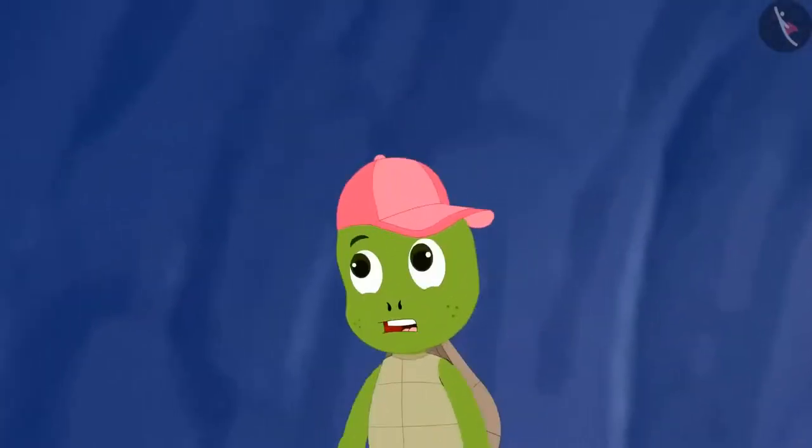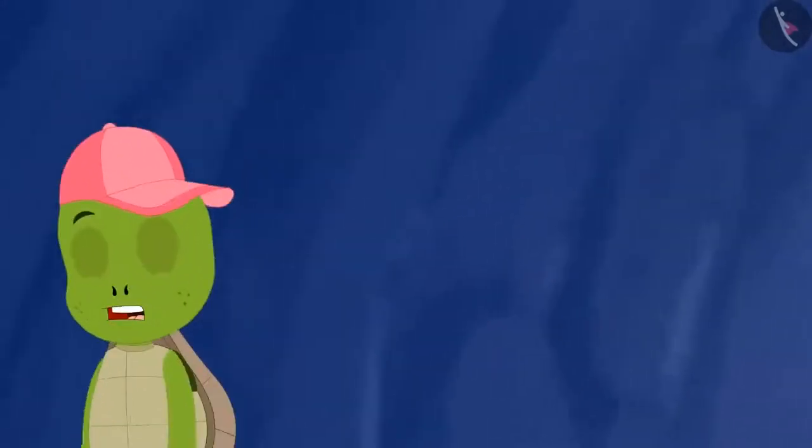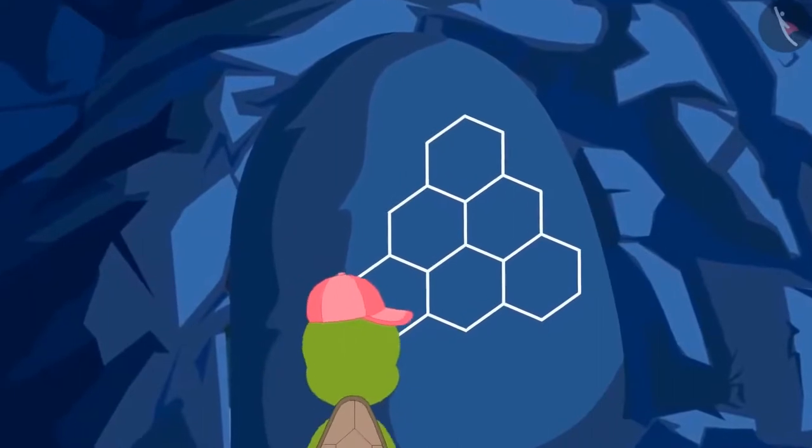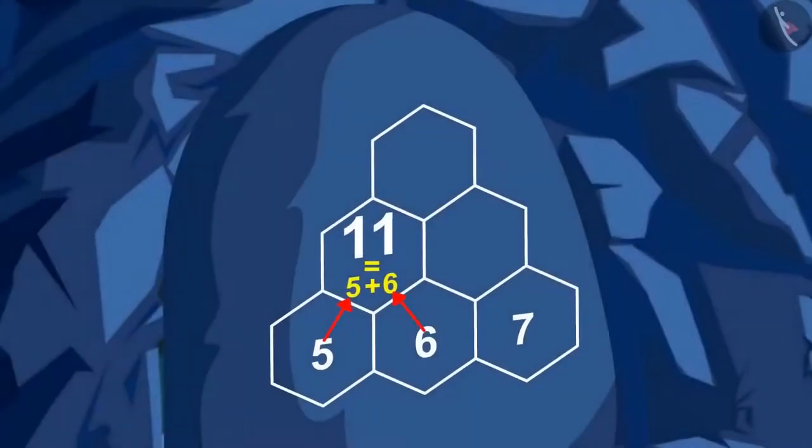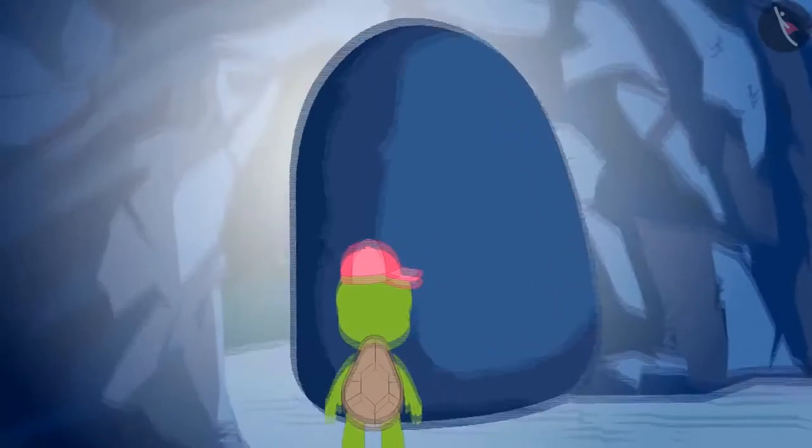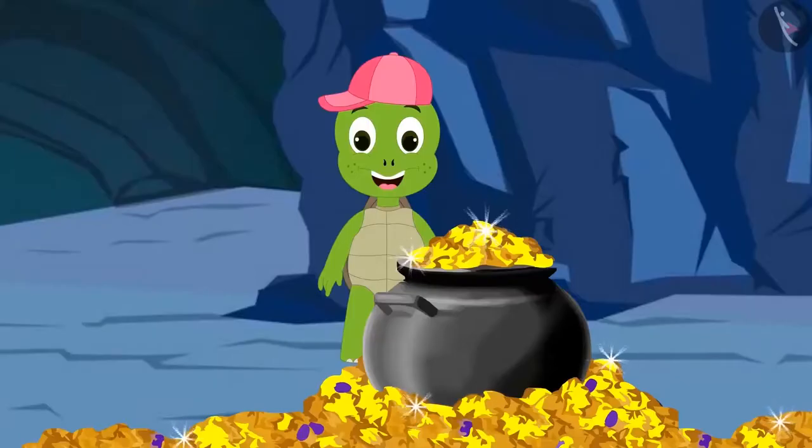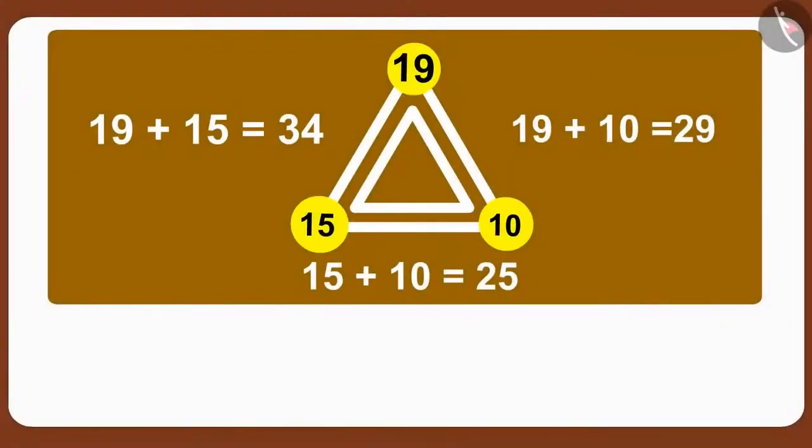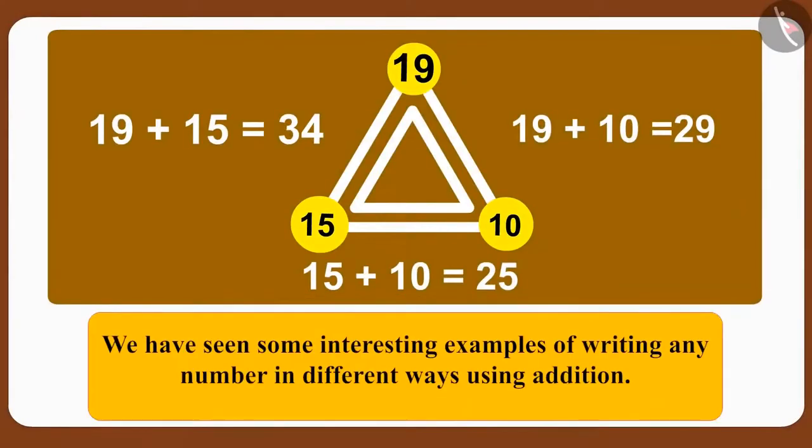Tufan started moving faster to reach the third door. At last, Tufan reached the third door. At the third and last door, Tufan saw this puzzle. Tufan has found the right answer to the puzzle. Now, you too, try to find the answer to this puzzle. The third door opened and Tufan found a lot of treasure. Children, in this lesson, we have seen some interesting examples of writing any number in different ways using addition.